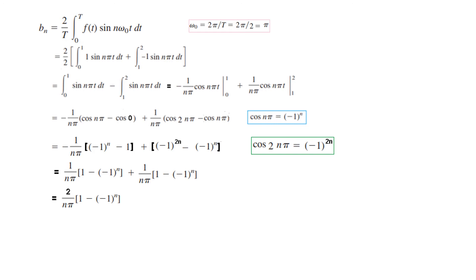And then rearranging this the minus sign if it comes inside then it will be 1 minus minus 1 power n. And this remains same. So now both the terms are same. So we just add them. So it will be 2 over n pi times 1 minus minus 1 power n.